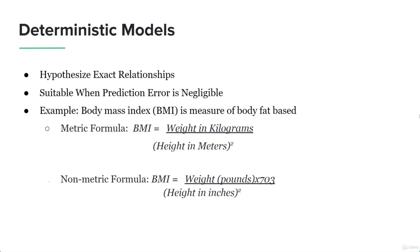Let's talk about deterministic models. Deterministic models hypothesize exact relationships and are suitable when prediction error is negligible. An example would be the body mass index — a measure of body fat. The metric formula for BMI is weight in kilograms divided by height in meters squared. Deterministic models hypothesize exact relationships between variables, so they are quite fixed and the answer is definite.